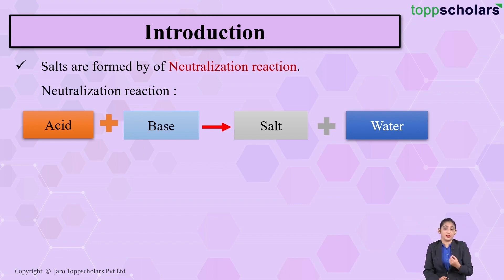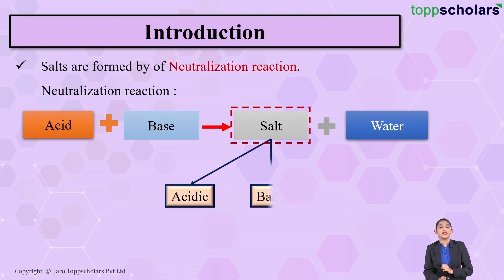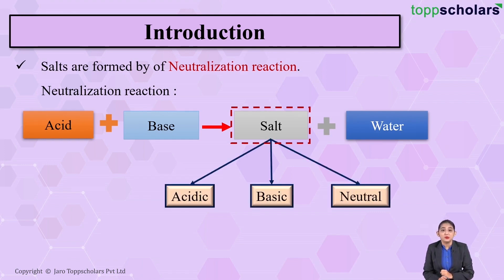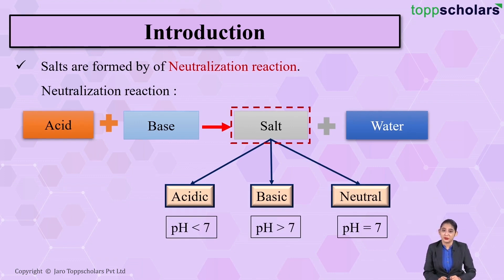The topic we are discussing today is simply salts. Salt is formed during a neutralization reaction. This salt can be broadly classified into three categories: acidic salt, basic salt, and neutral salt. Acidic salt has a pH less than 7, basic salt has pH greater than 7, whereas neutral salt has pH equal to 7.